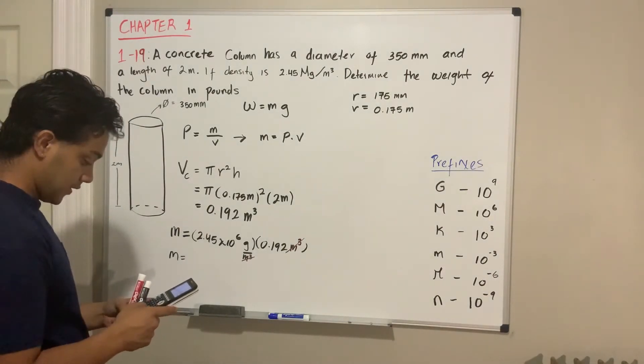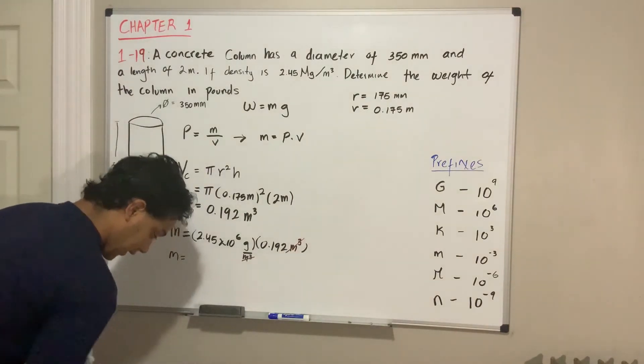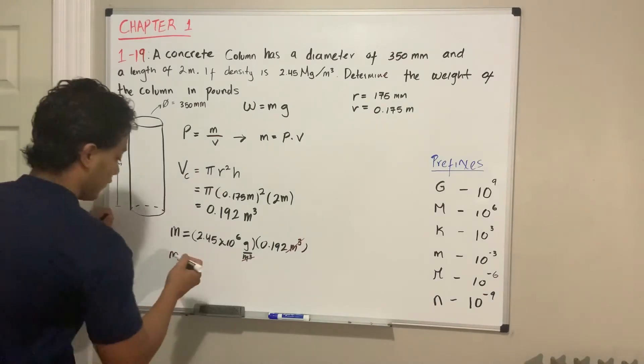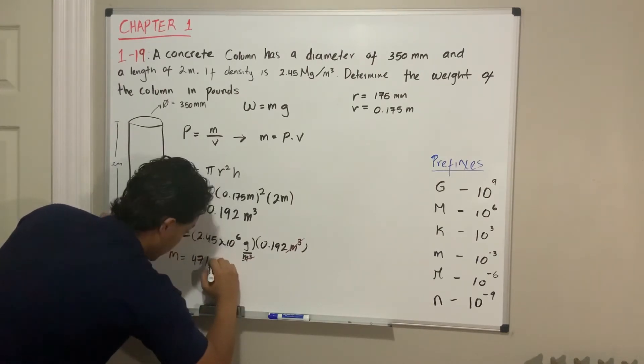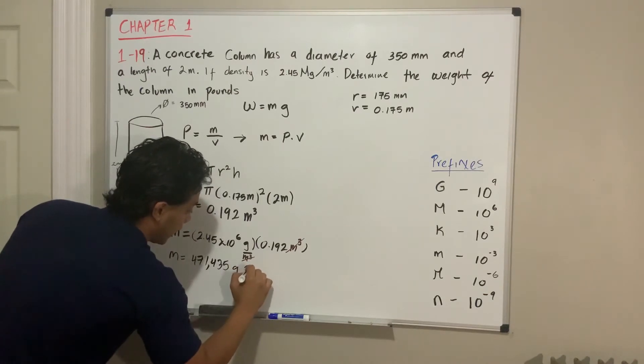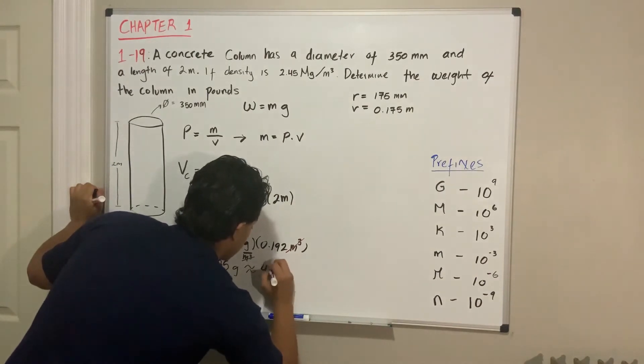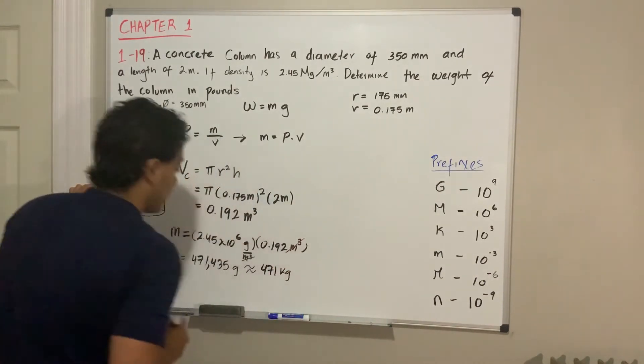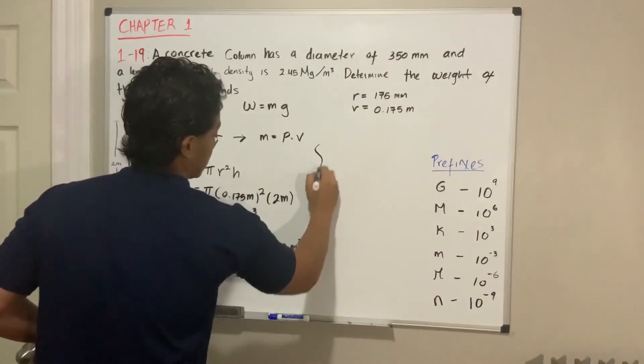So at the end, mass is going to be equal to, using our calculator, 2.45 times 10 to the positive 6 times the volume, and we get 471,435 grams, which we can approximately round to 471 kilograms.